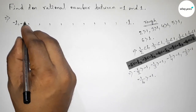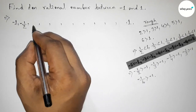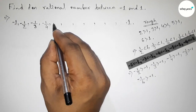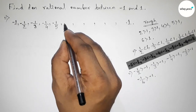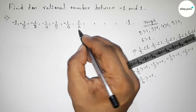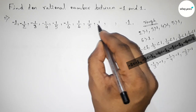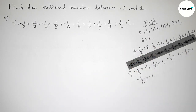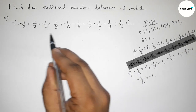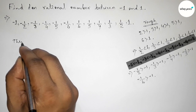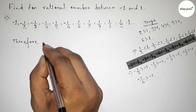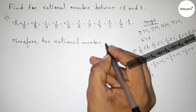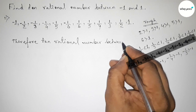Now writing down the answer: first minus 1/2, then minus 1/3, then minus 1/4, then minus 1/5, then minus 1/6. Then starting from positive side: 1/6, 1/5, 1/4, 1/3, and 1/2. So these are the required 10 rational numbers between minus 1 and 1.